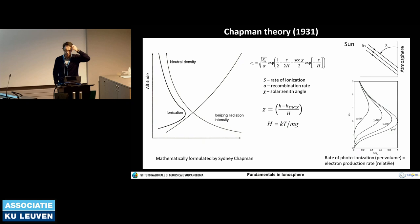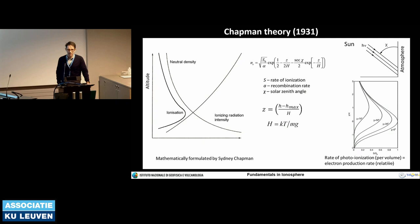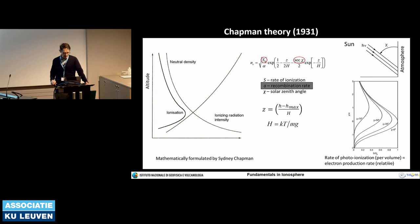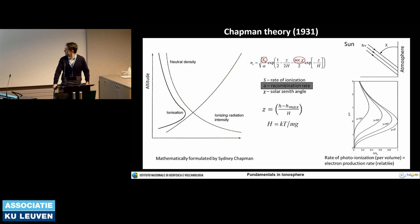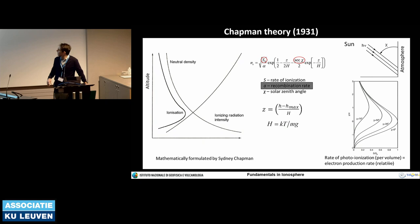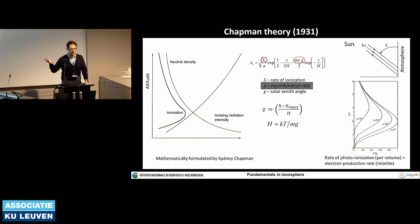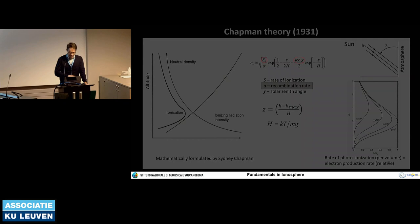The Chapman layer gives the electron density as a function of altitude. The important factors are the rate of photo-ionization, the solar zenith angle — which gives you an idea of how efficiently the Sun transfers photons to the atmosphere — and the recombination rate. Essentially, it depends on the neutral density, the irradiance, and the solar zenith angle. This is the most simple ionospheric layer you may think of.